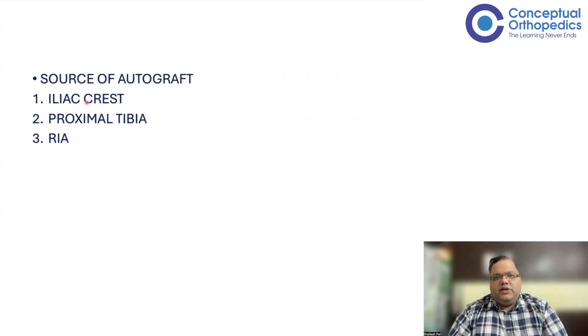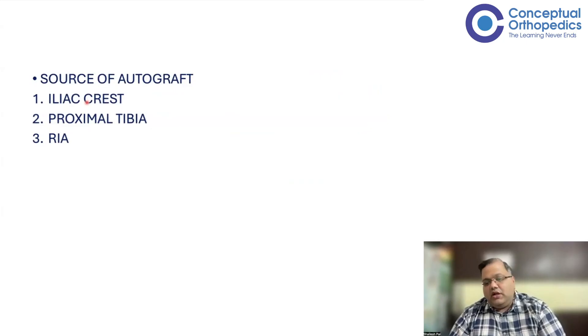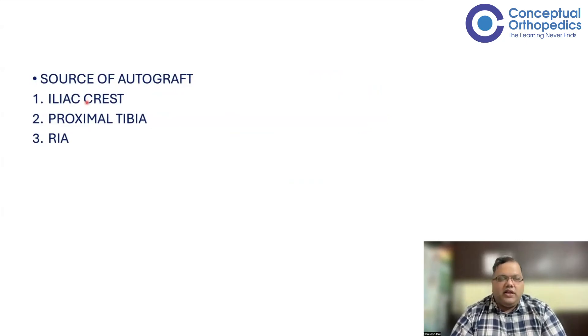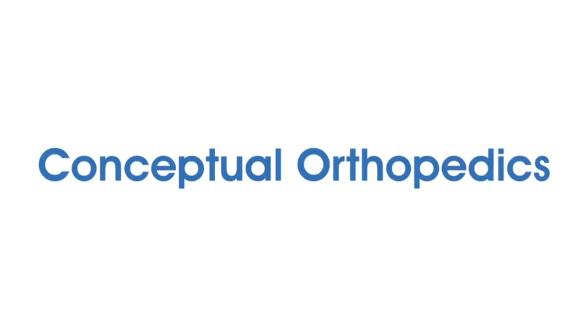For autograft, donor sites include the iliac crest and proximal tibia. We also now have the RIA — the Reamer-Irrigator-Aspirator technique — which is another method for harvesting autograft bone.